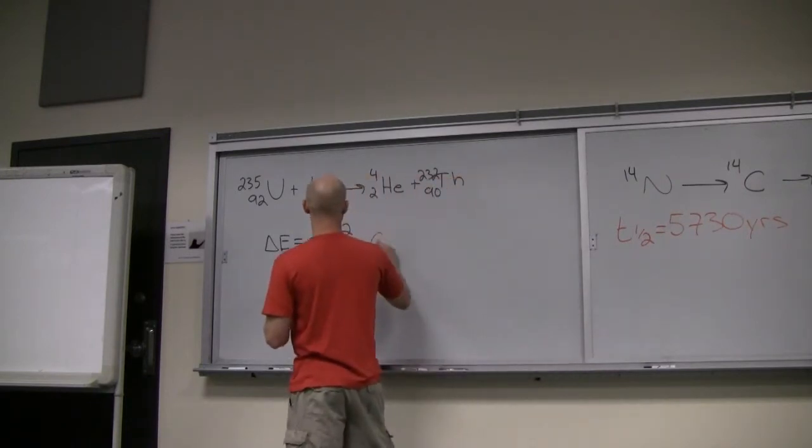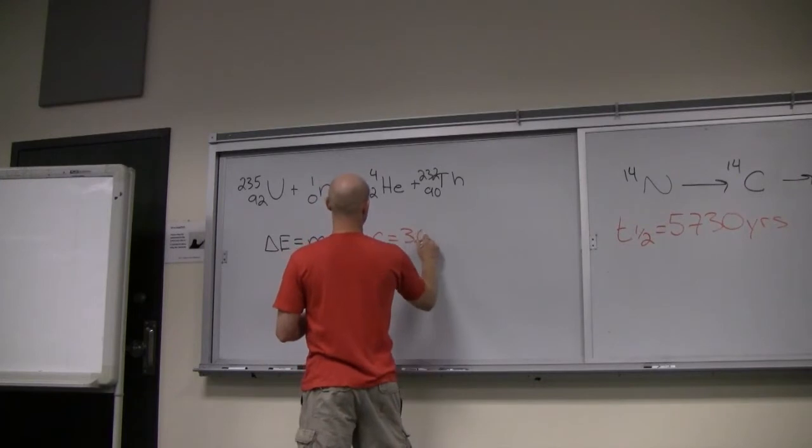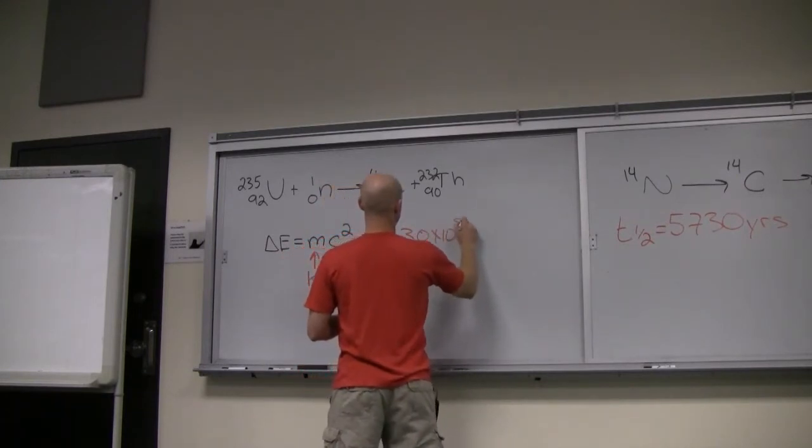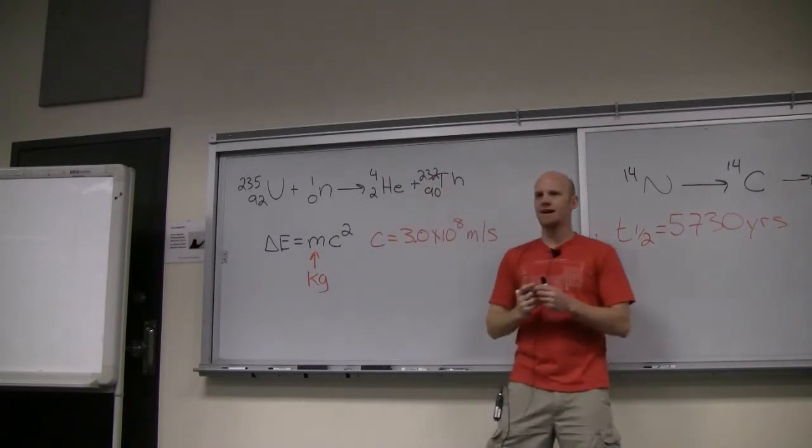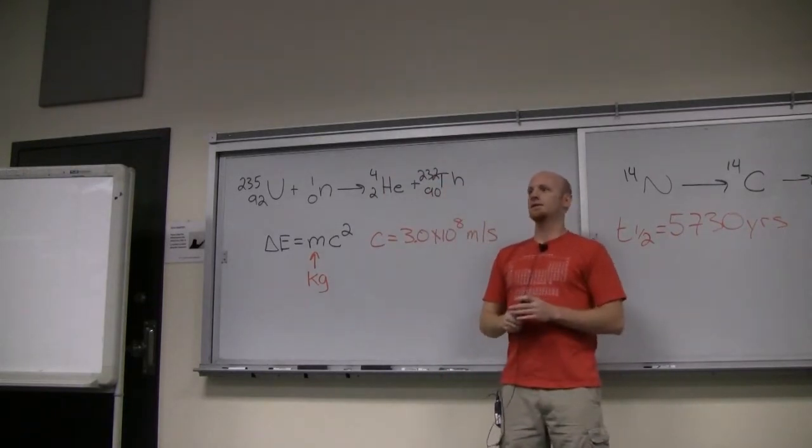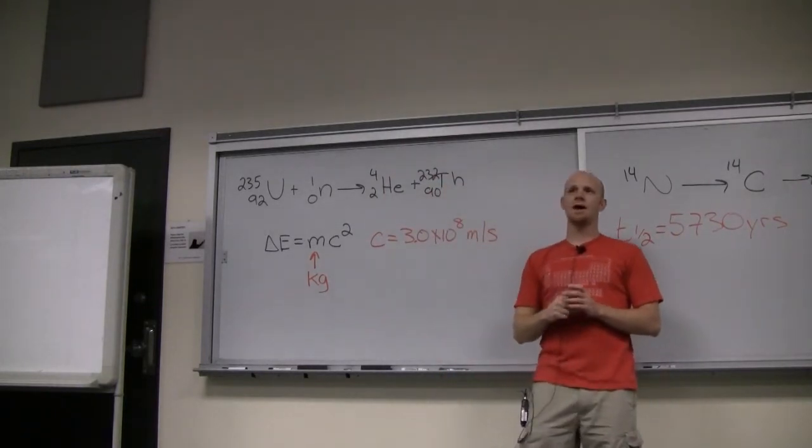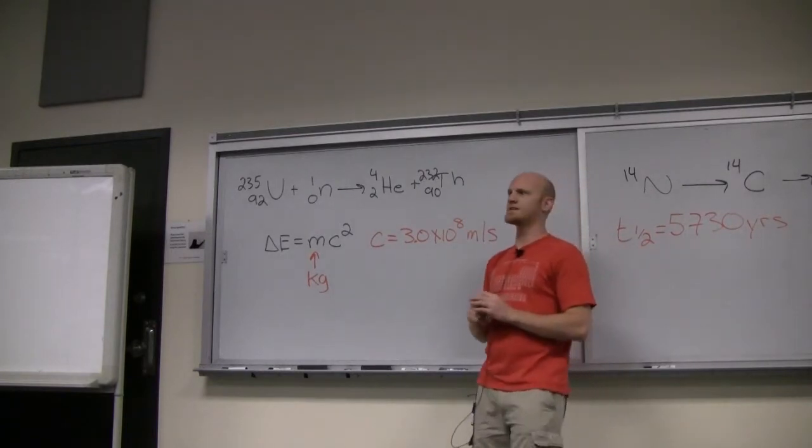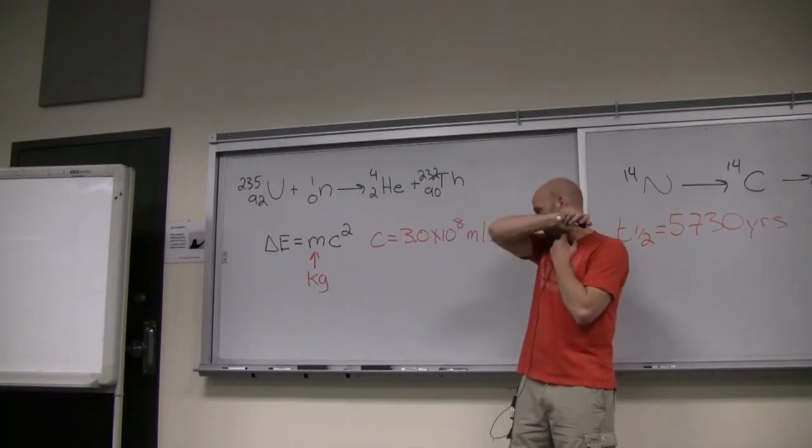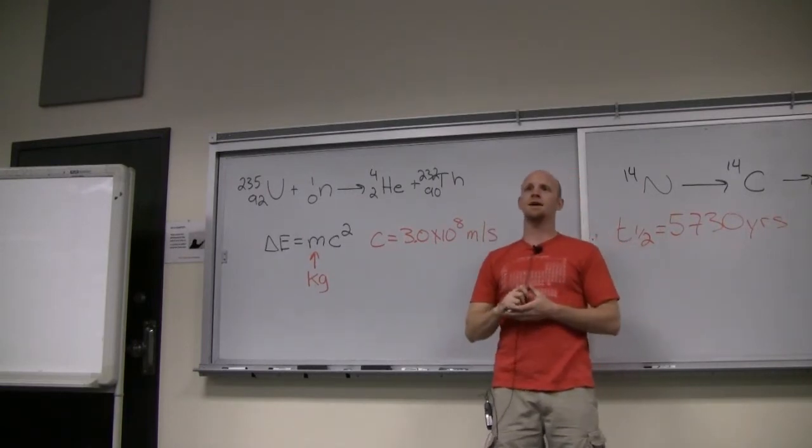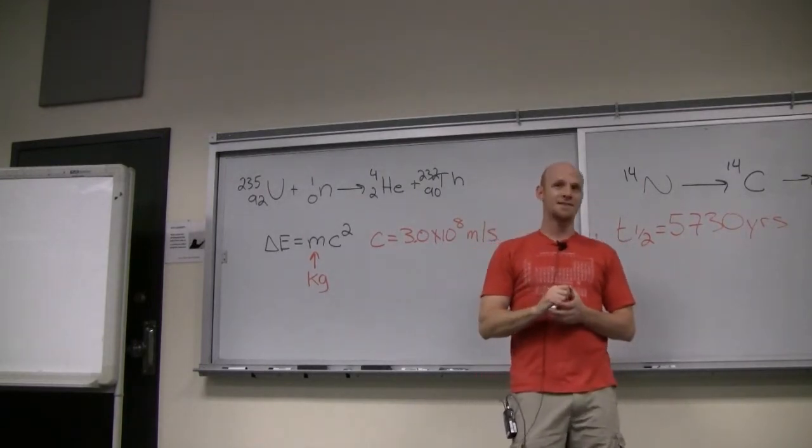Anybody know what the speed of light is? 3 times 10 to the 8th meters per second. Yeah, 3 times 10 to the 8th meters per second. How fast is that? Very fast. It's fast enough to go around the Earth at the equator seven times in one second. It's fast enough to go to the moon and back in three seconds. It's fast.